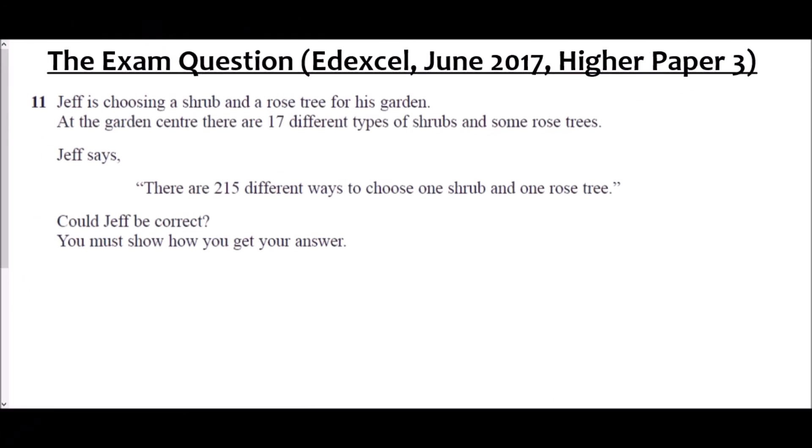And so our last question is the exam question. It comes from Edexcel in June 2017 and it's higher paper three. Now, because it's paper three, that is a calculator paper, meaning we can use a calculator later on if needed. So in the question, Jeff is choosing a shrub and a rose tree for his garden. At the garden center, there are 17 different types of shrubs and some rose trees. Jeff says there are 215 different ways to choose one shrub and one rose tree. Could Jeff be correct? You must show how you get your answer.